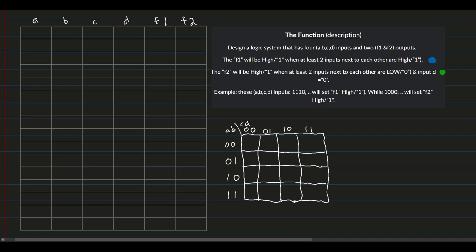There is an easier way to write the kmap labels. For the AB axis, the first two columns are C̄ (A0) and then the last two are A. Similarly, for the rows, we have D̄ (D0), then D, then D̄, then D. For B, we label: B̄, B, B̄, B. Now we can fill out our truth table.